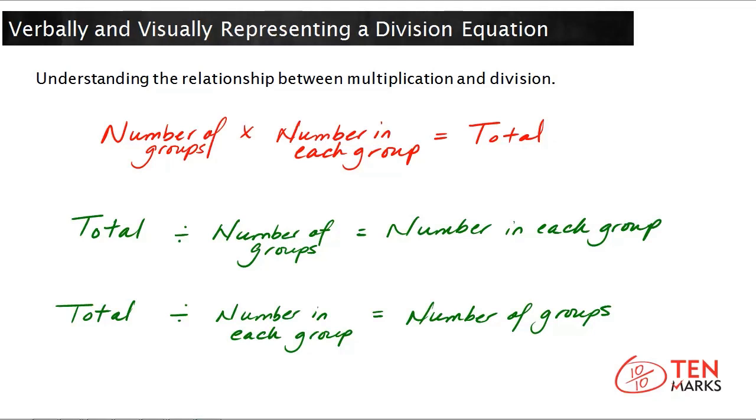Now you can write the division sentence or think of the division sentence either way, but there are some important key terms to know. The number that you divide is called the dividend. The dividend is also the total. The number you divide by is the divisor. And the answer you get when you divide two numbers is called the quotient.